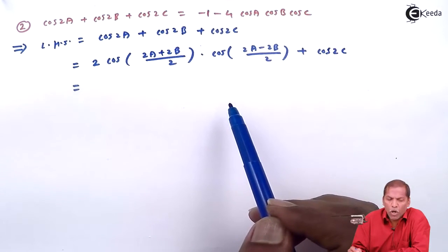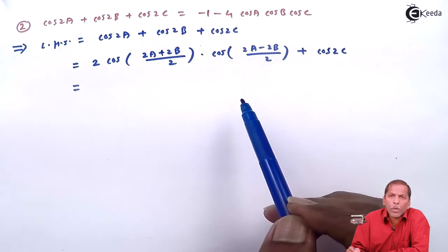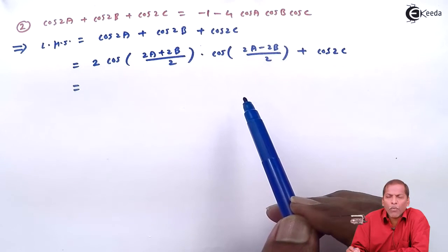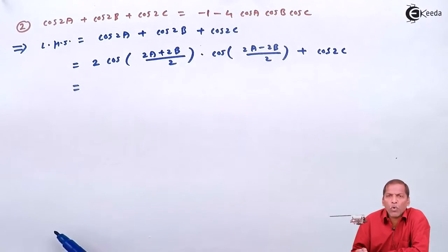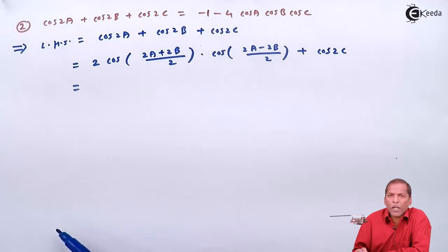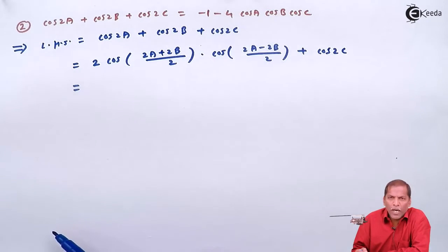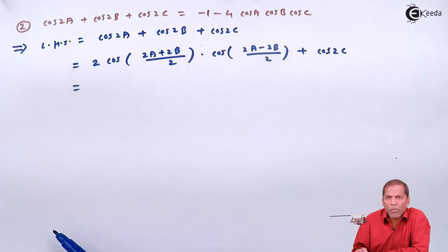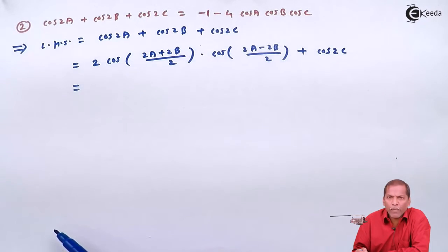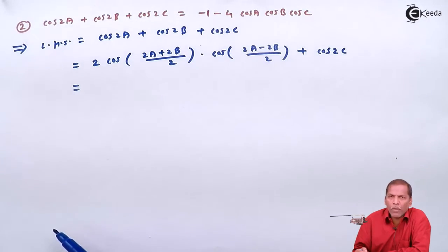After that, for cos2c, we apply the cos(2θ) formula. That is 2cos²(c) - 1. So finally we get 2·cos(a+b)·cos(a-b) + 2cos²(c) - 1.